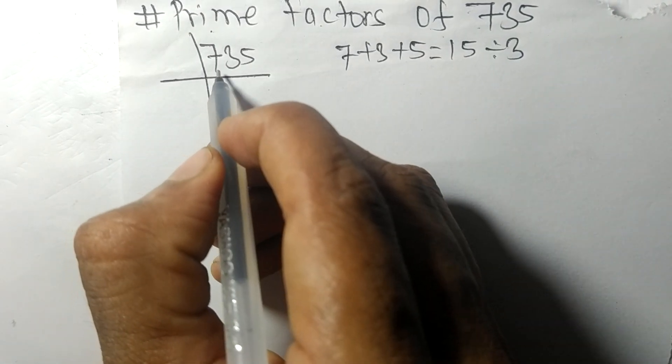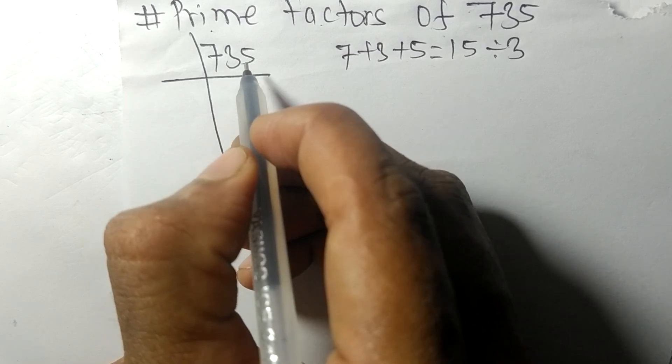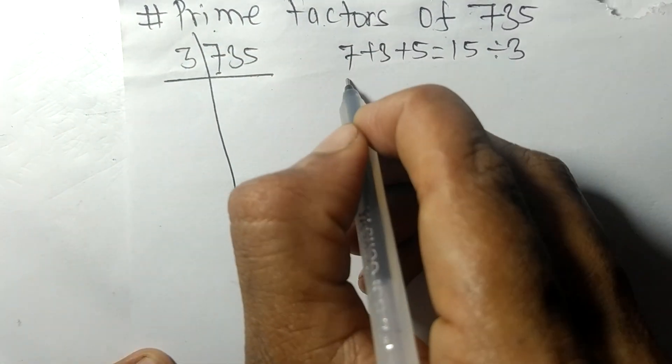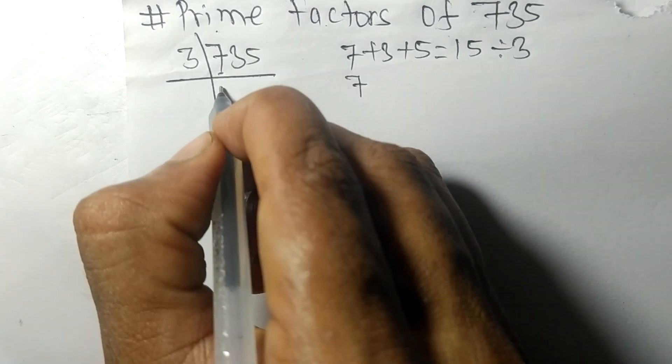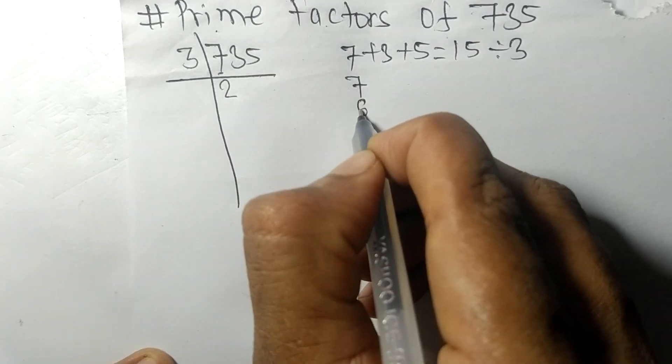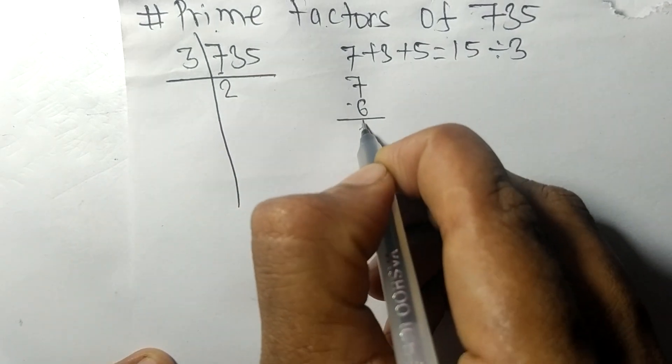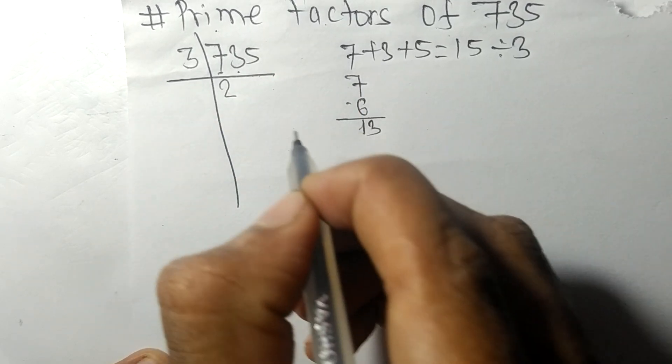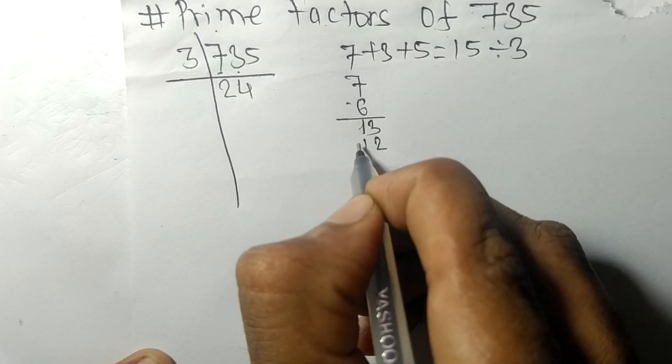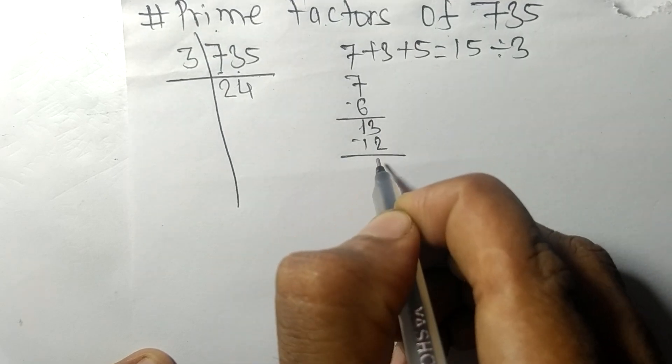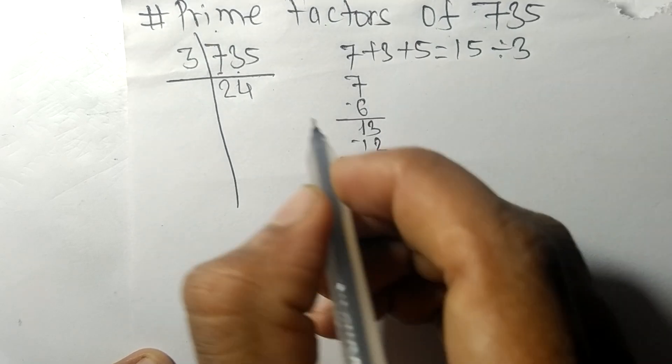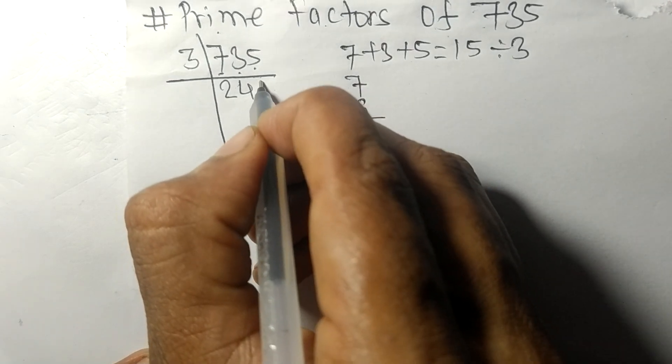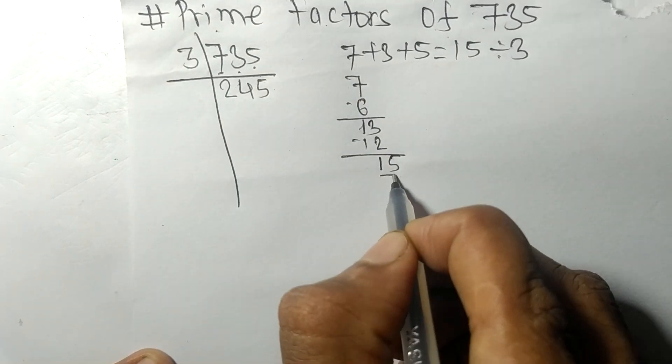So 735 is also divisible by 3. First we have 7—3 times 2 means 6, remainder 1, bringing down 3 gives 13. 3 times 4 means 12, subtracting gives 1, and bringing down 5 gives 15. 3 times 5 means 15.